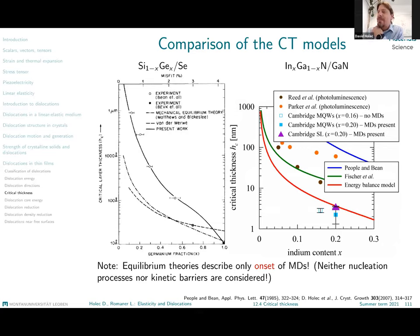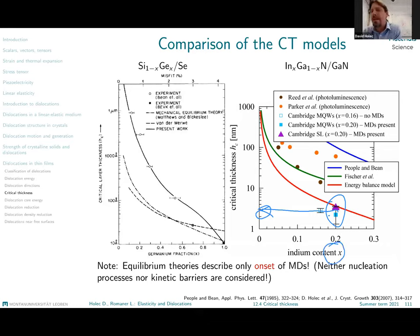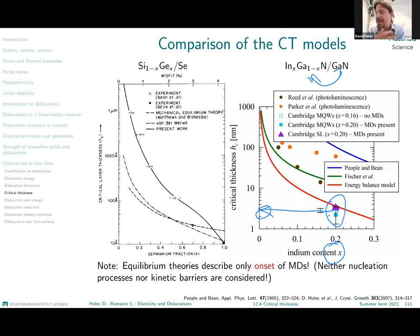You may say the model is completely wrong because some dislocations are observed even below the critical thickness. To that point, I just have to point your attention to the axis — we speak about film thicknesses on the order of two to three nanometers, which is extremely thin. It means that at such high indium content, the lattice mismatch between indium gallium nitride and gallium nitride is so large that dislocations become favorable pretty much from the beginning. It is impossible to grow a dislocation-free InGaN on top of gallium nitride.